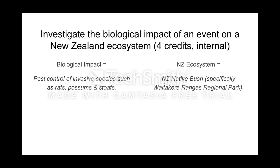The invasive species we're looking at are rats, possums, stoats, mice, and cats. These are not native to New Zealand; they're invasive because they spread rapidly to the detriment of other species around them. The ecosystem we're talking about is the New Zealand bush — in this case, the Waitakere Ranges regional park. We are looking at the effect of pest control on the New Zealand bush, the Waitaks.